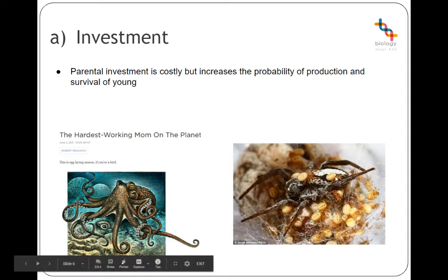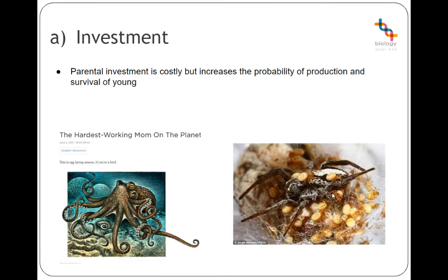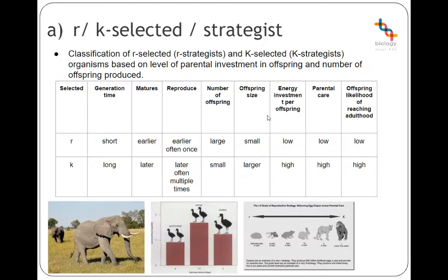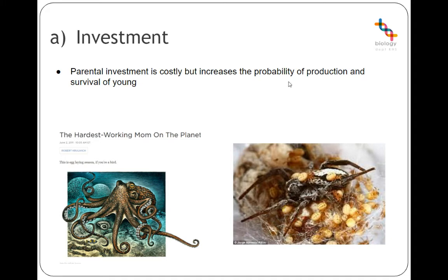There's also a spider where the female sits on top of fertilised eggs. As they hatch, they eat her from the bottom of her abdomen up — she lets them, because she is their first meal. You may also have heard of a spider where the male brings what's called a nuptial gift — either a food packet for the female to eat while mating, or if that's not enough, she eats him instead. You really have to think about how much these organisms invest, but it all helps the offspring.